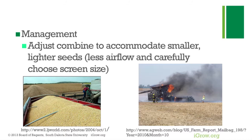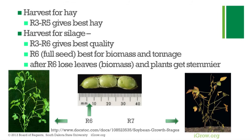Management for late season drought: adjust your combine to accommodate smaller, lighter seeds — less airflow and carefully choose screen size. Also remember there's a possibility of combine fires when it's very dry. If harvesting for hay, R3 to R5 gives the best quality. For silage, R3 to R6 is best quality; for maximum biomass, target R6. After R6 the plant gets stemmy and silage quality drops, so not all is lost — you can harvest for hay or silage.